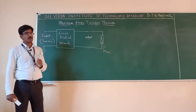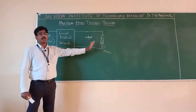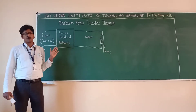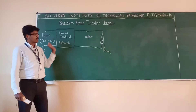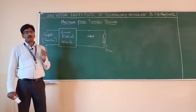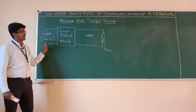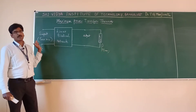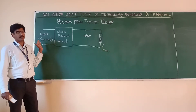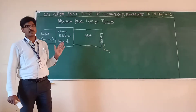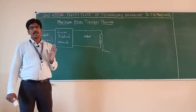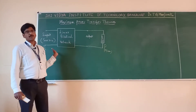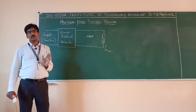Under what conditions is power transferred from source to the load maximum? It will transfer the power — but we want to transfer maximum power to the load. This depends upon the type of source and the type of load we are using. In an electrical system, the source can be either DC or AC, and the load can be resistive, inductive, capacitive, or a combination such as RL or RC. Depending upon the type of source and load, maximum power transfer depends.